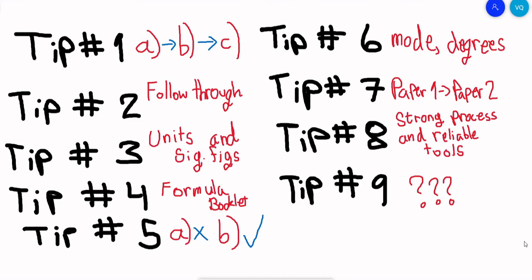Moving on to tip number six, quickly with the calculator, make sure that your mode is on degrees and not radians. Also make sure you have batteries with your calculator.